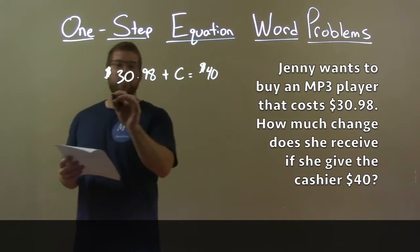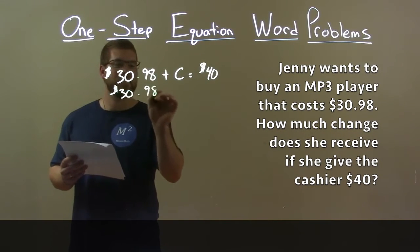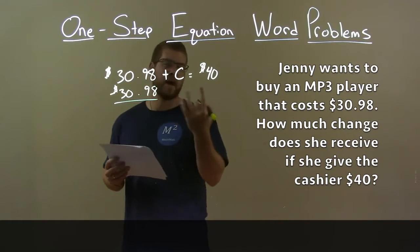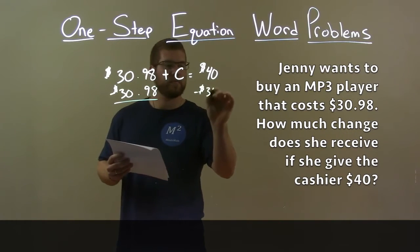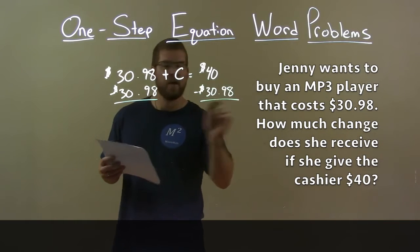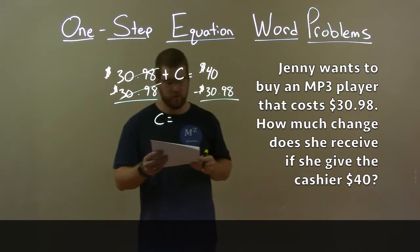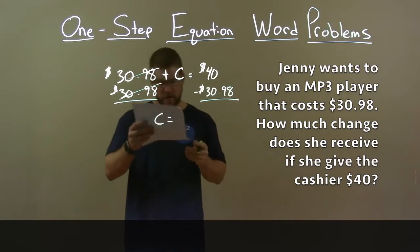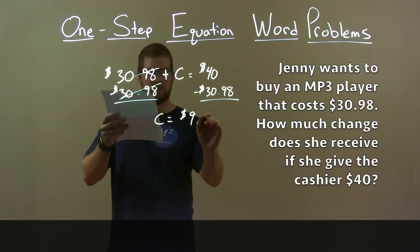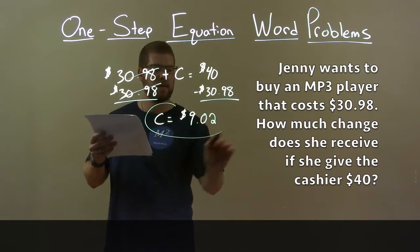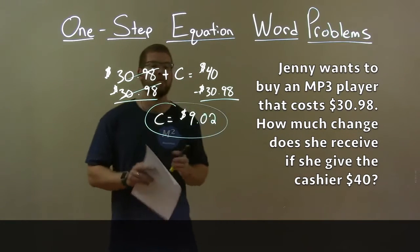To get C by itself, I'm going to subtract $30.98 from both sides — opposite of addition is subtraction. $40 minus $30.98 is $9.02. That's our final answer — the amount of change that Jenny received.